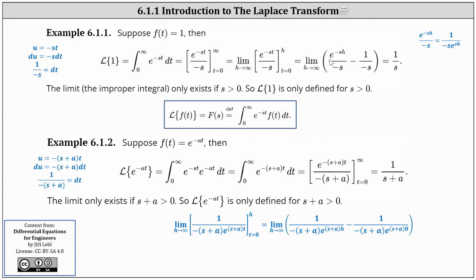To find this limit, it is helpful to rewrite e to the power of negative sh divided by negative s as one over the product of negative s and e to the power of sh. In this form, it's easy to see that when h approaches infinity, this fraction approaches zero, giving us zero minus one divided by negative s, or one over s for the Laplace transform of f of t equals one. It is important to remember that the limit and the improper integral only exist when s is greater than zero, so the Laplace transform of one is only defined for s greater than zero.